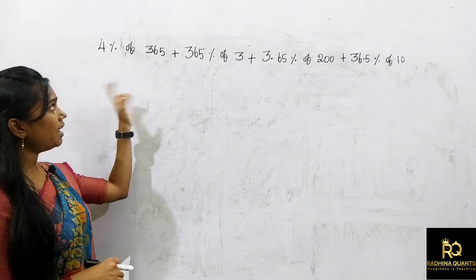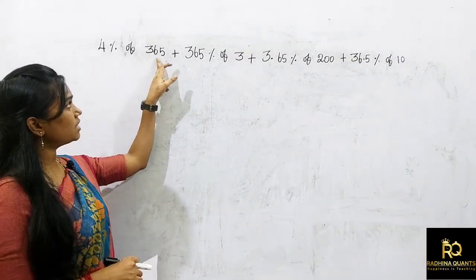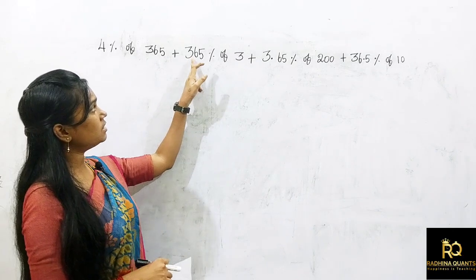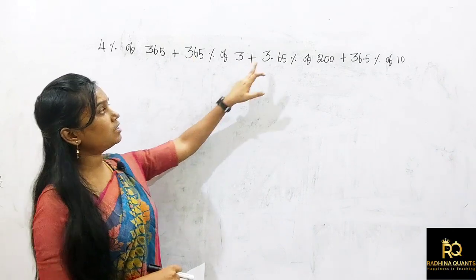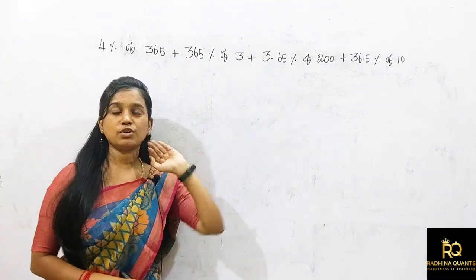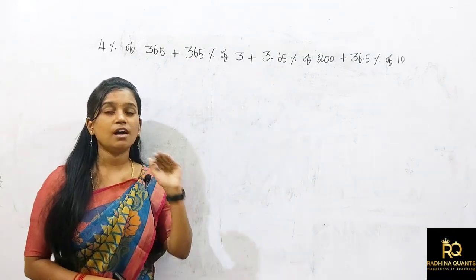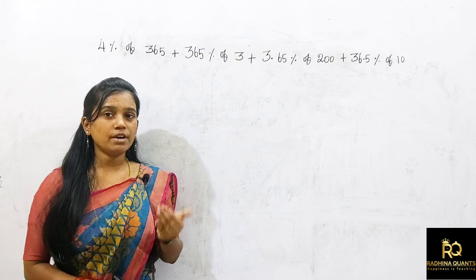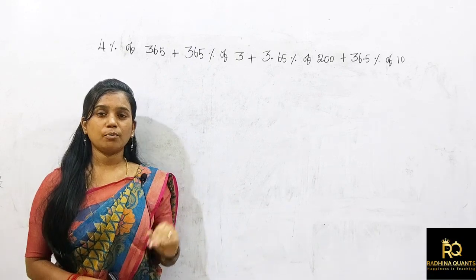We can use the same method — there are tricks. In every unit we have 365: 365, 365, 36.5, 36.5. What is the same? We can do this.